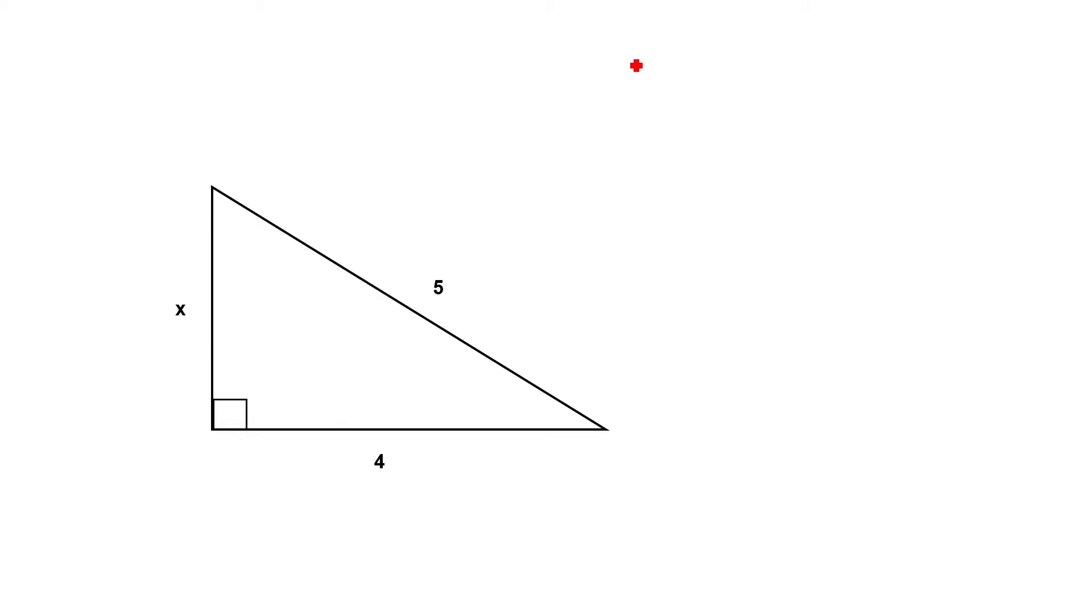So all we need to do here is substitute these into the Pythagoras theorem equation. So we end up getting five squared equals four squared plus the unknown side squared.